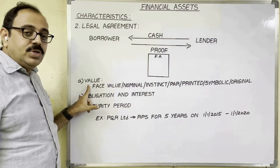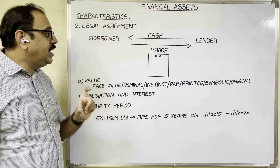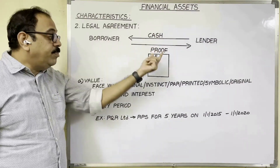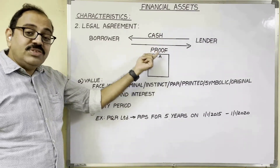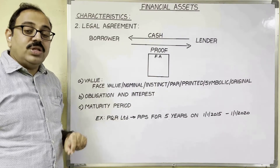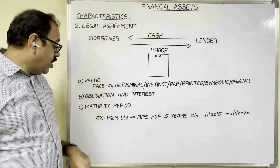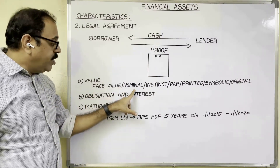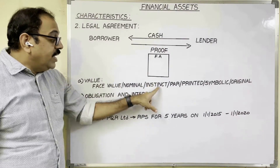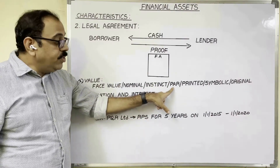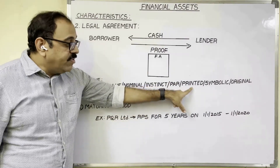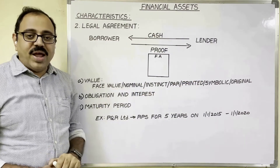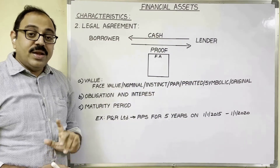Regarding value: the value decided between the borrower and lender will be printed on this financial asset. That value is known as face value or nominal value, intrinsic value, par value, printed value, symbolic value, or original value.